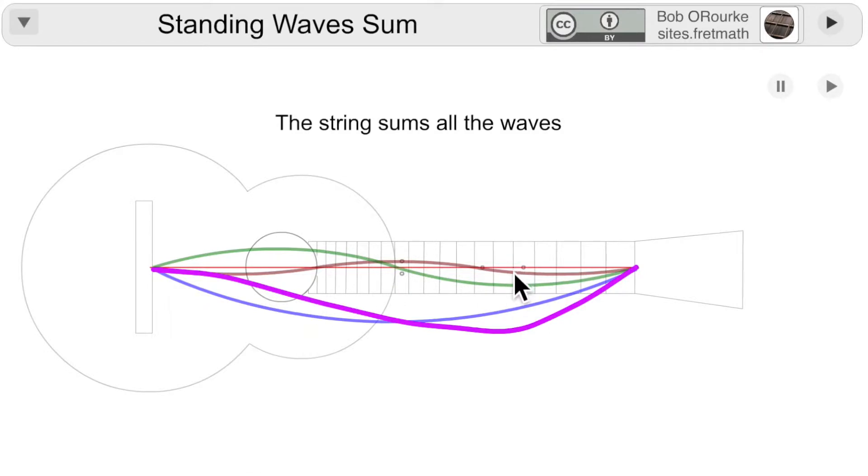And note that the string at this location is the sum of each of the harmonic series of waves at this point in their cycle.